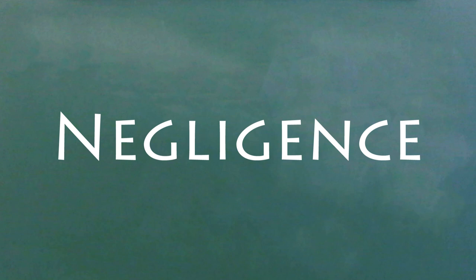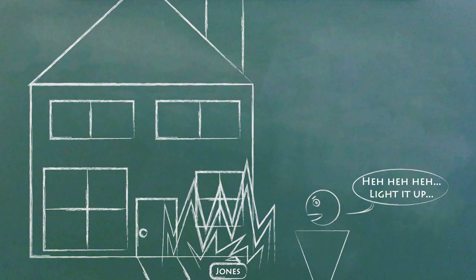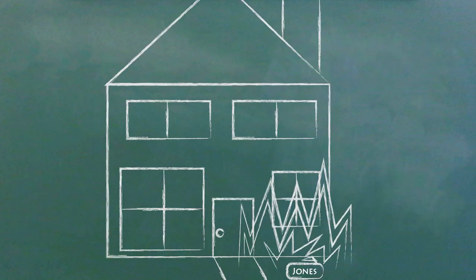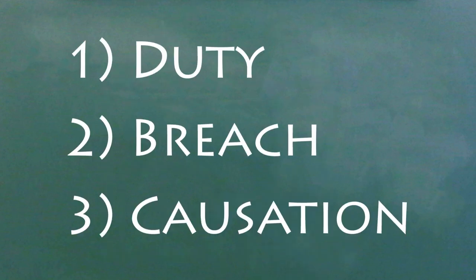Now we'll talk about negligence. Where an intentional tort is about someone doing something they weren't supposed to do, negligence usually happens when someone doesn't do something they were supposed to do. There are three parts to a negligence case: duty, breach, and causation.